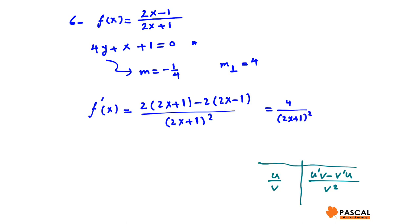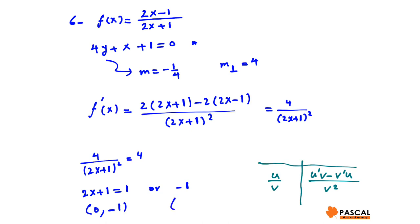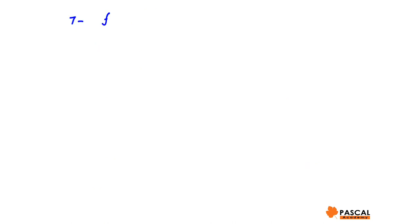Setting the slope of the tangent line equal to 4 means 2x plus 1 is either 1 or negative 1. If 2x plus 1 equals 1, then x equals 0 and the point is (0, −1). If 2x plus 1 equals negative 1, then x equals negative 1 and the point is (−1, 3). Therefore at points P(0, −1) and Q(−1, 3), the tangent line to the graph is perpendicular to 4y plus x plus 1 equals 0.